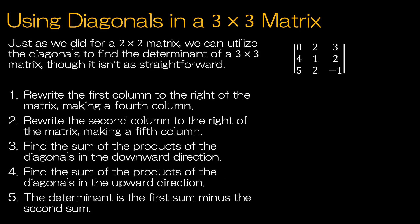We can also use the diagonal method with a 3x3, 4x4, or 5x5 matrix, but it gets tedious. It's a really easy method for a 2x2. For a 3x3 it is one method we could use, but I don't ever use it past 3x3. If you're going to use this method, the first step is to take the first column and write it again, then take the second column and write it again to the right. Then we're going to use diagonals, but there will be more than one product.